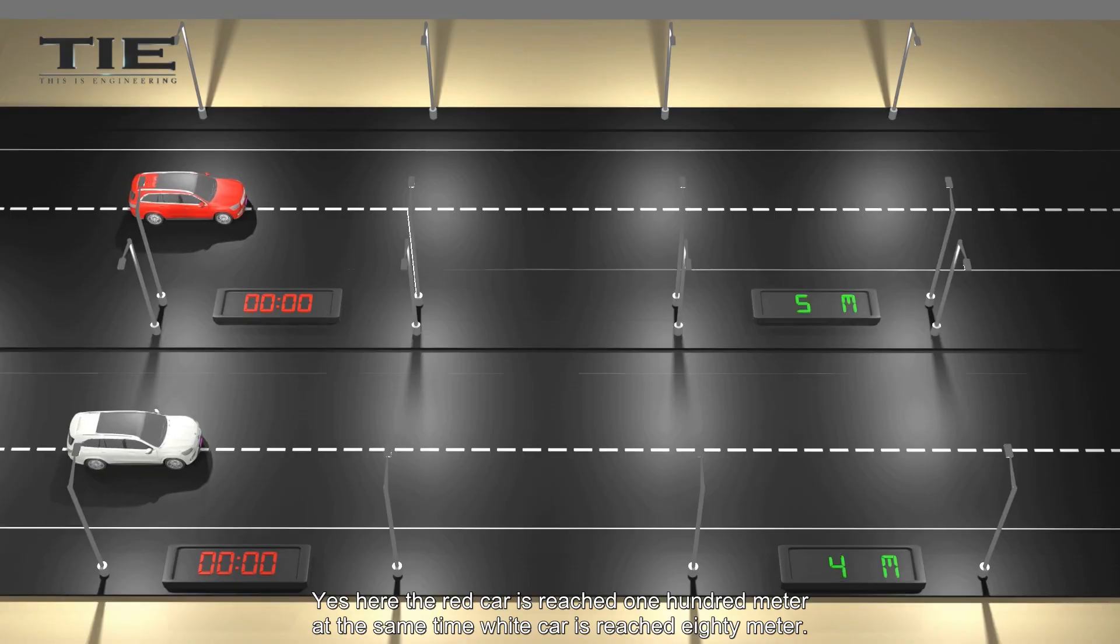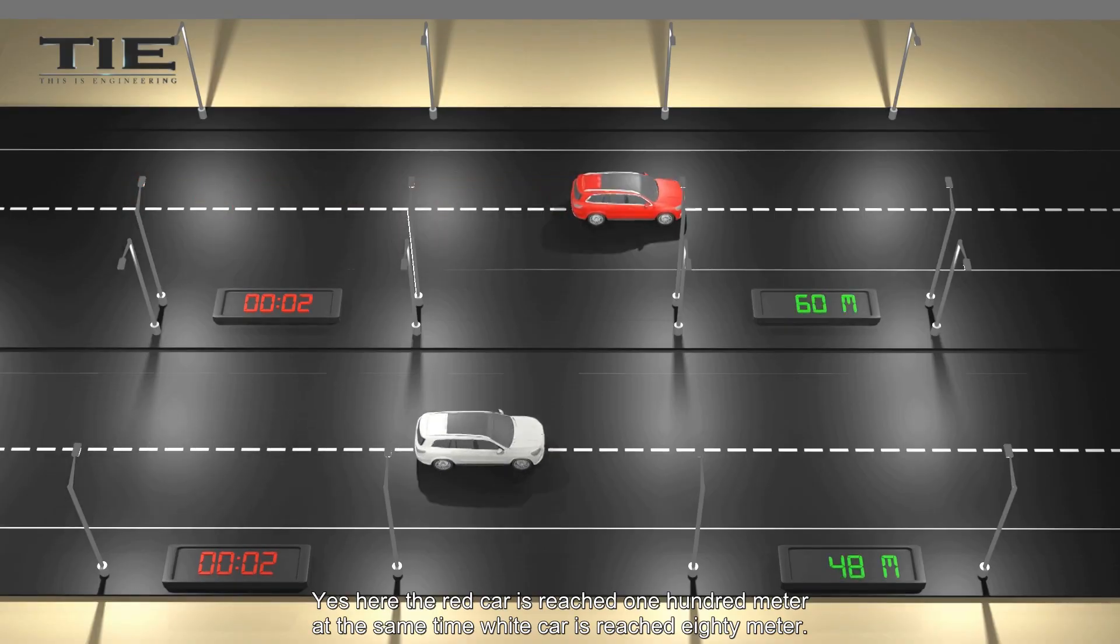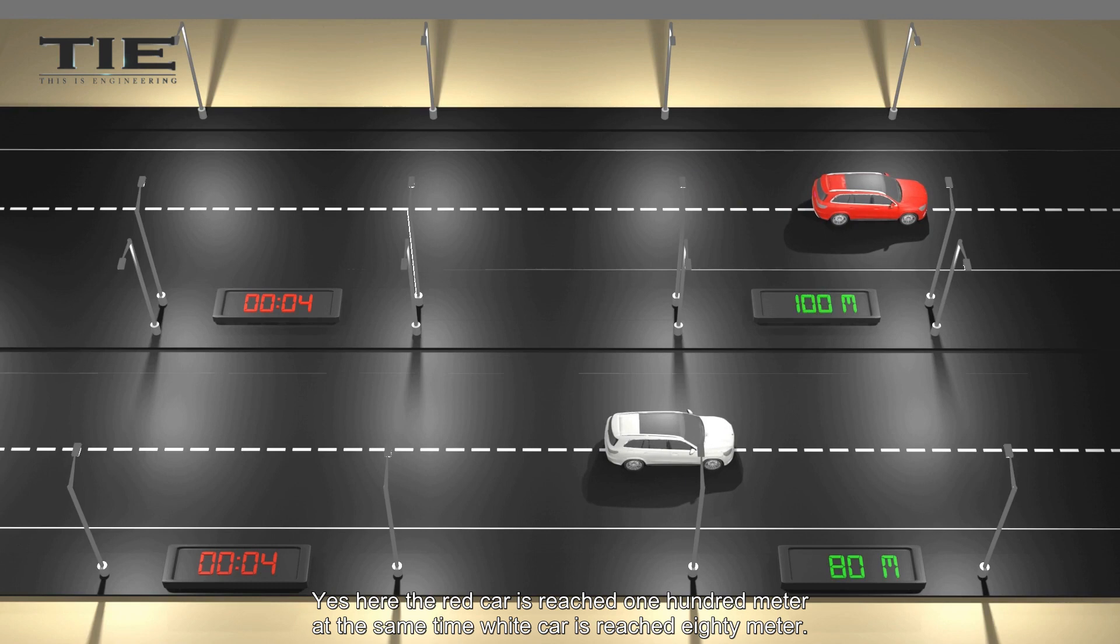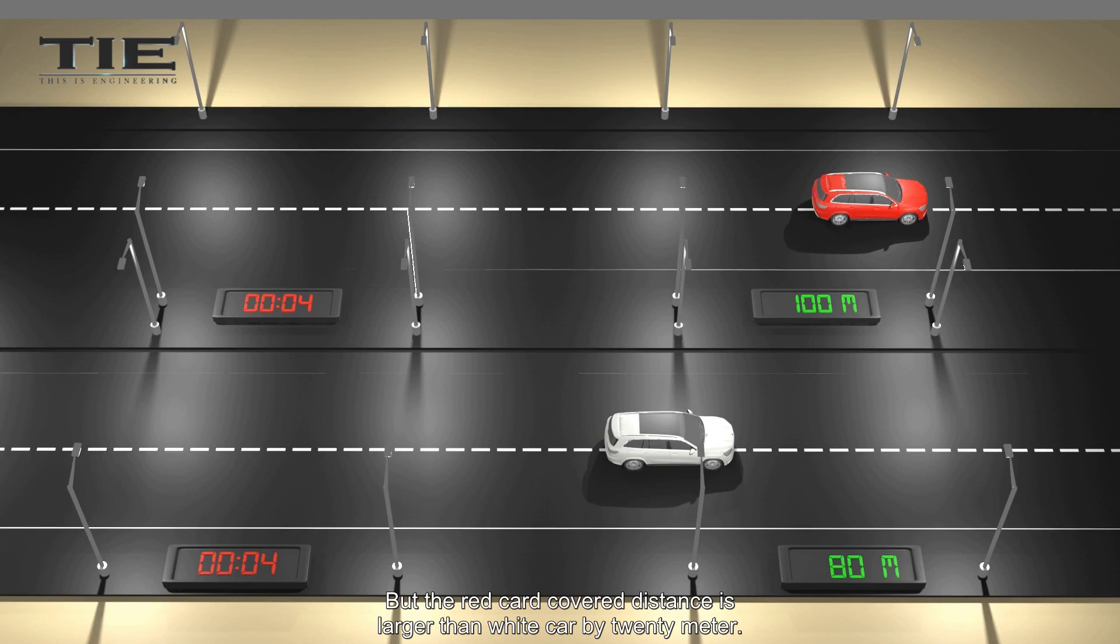Yes, here the red car is reached 100 meter, at same time white car is reached 80 meter. Here time is same. But the red car covered distance is larger than white car by 20 meter. Therefore, we come to the conclusion, red car is faster than white car.